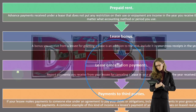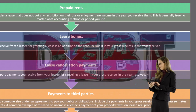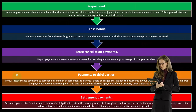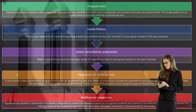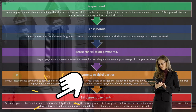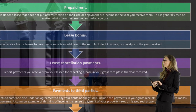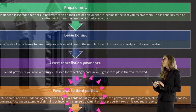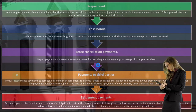A common example is a lessee's payment of your property taxes on leased real property. Settlement payments: payments you receive in settlement of a lessee's obligation to restore the leased property to its original condition are income in the amount that the payments exceed the adjusted basis of the leasehold improvements destroyed, damaged, removed, or disconnected by the lessee.